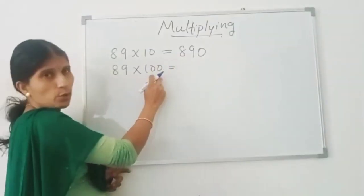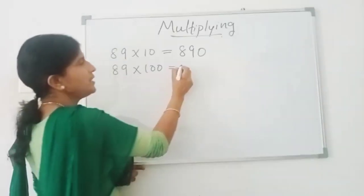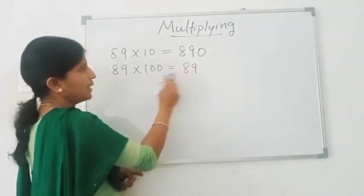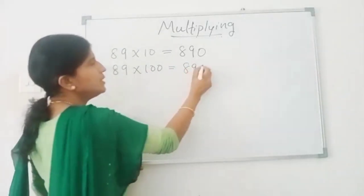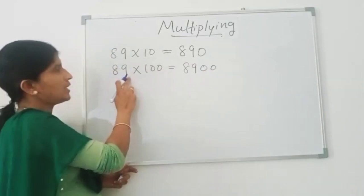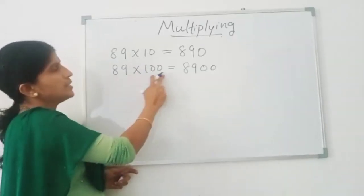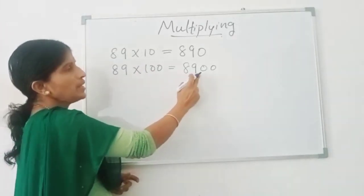What about 89 times 100? Okay, there are two zeros in 100. So, we can write 89 here and we can just add two zeros. So, 89 times 100 is equal to 8900.